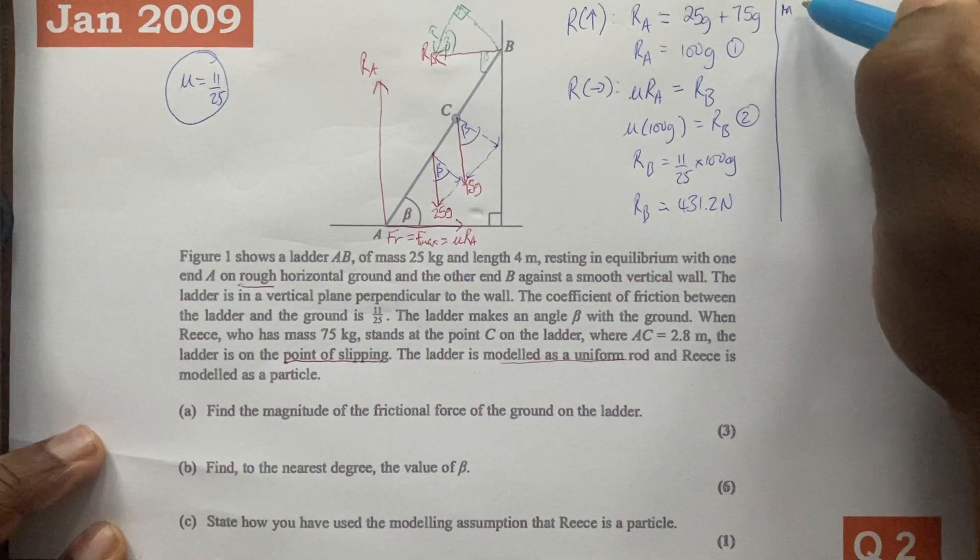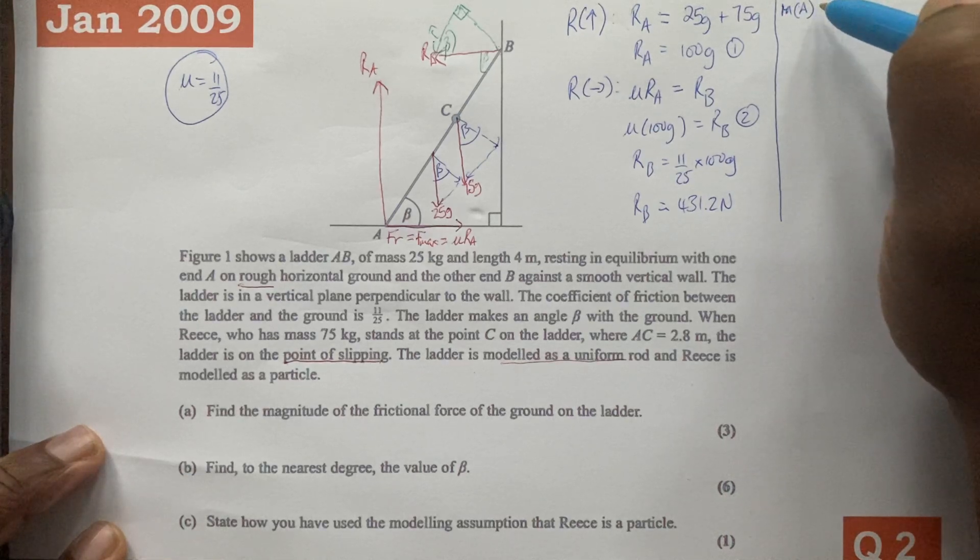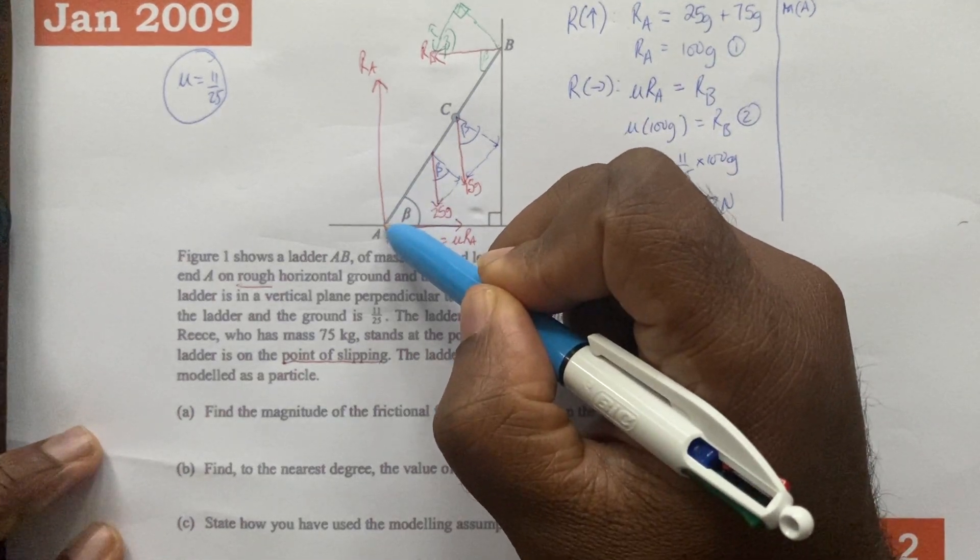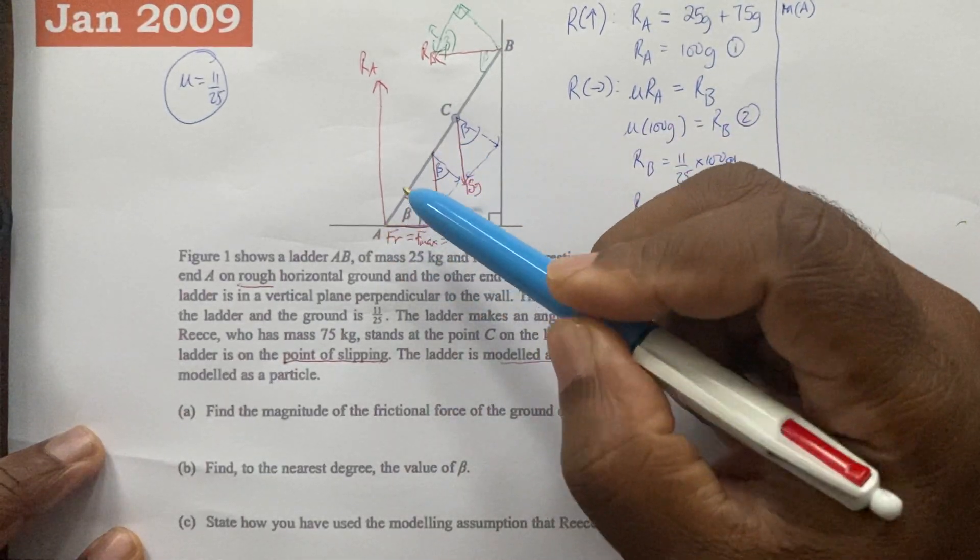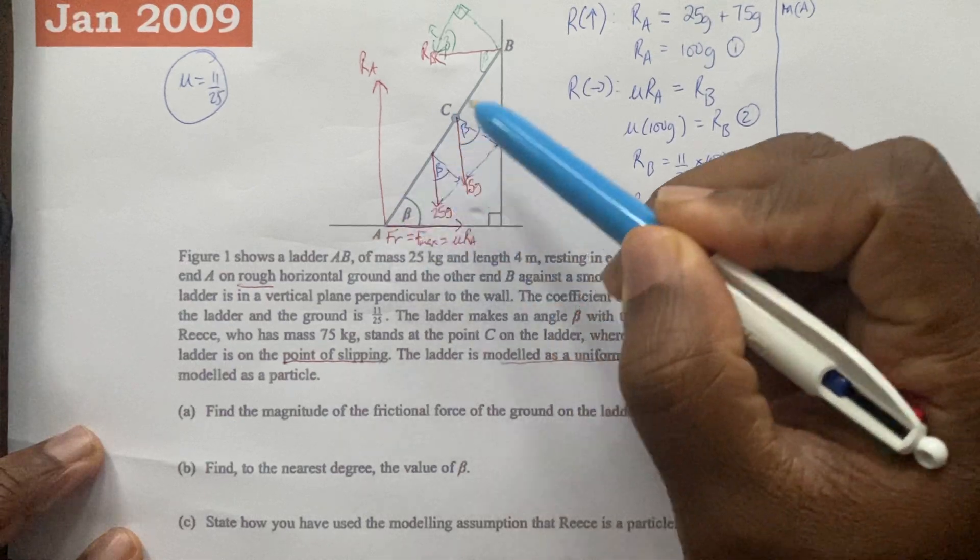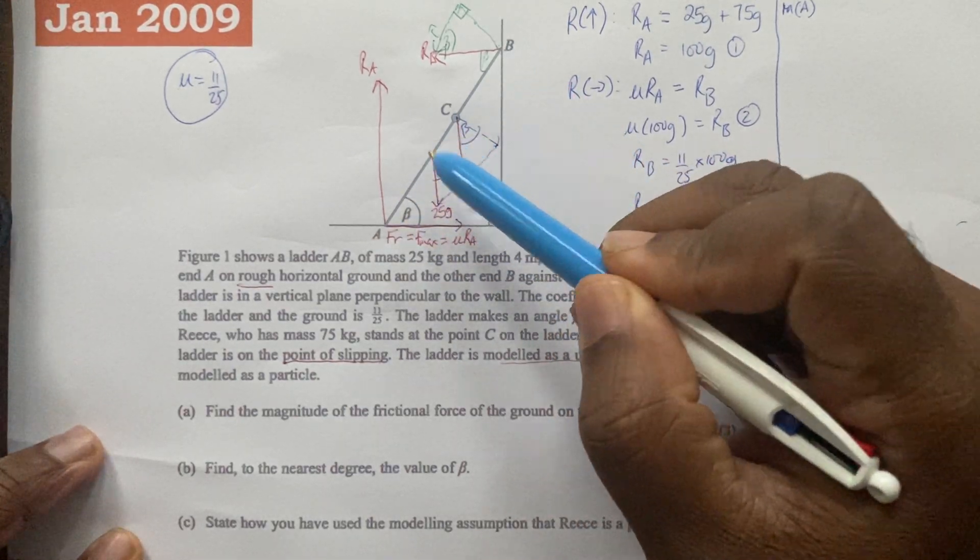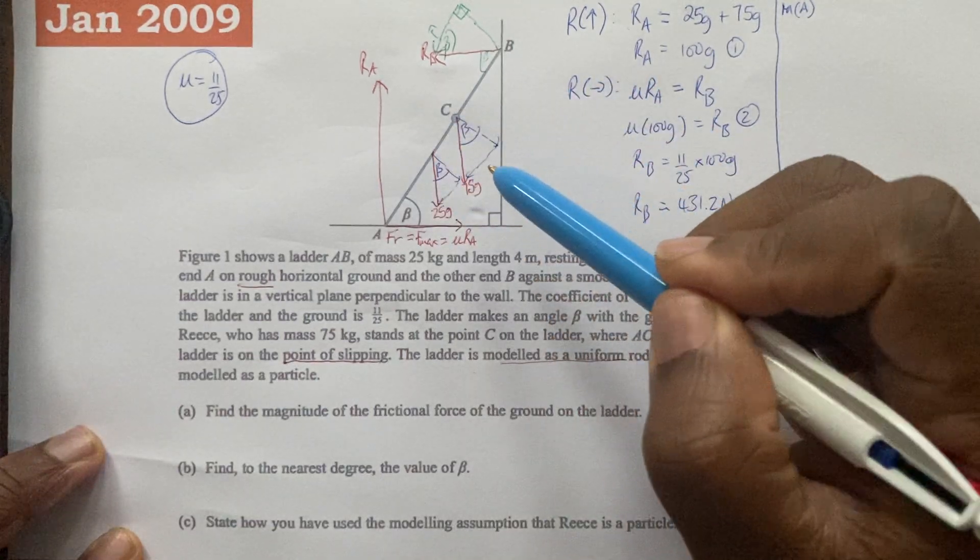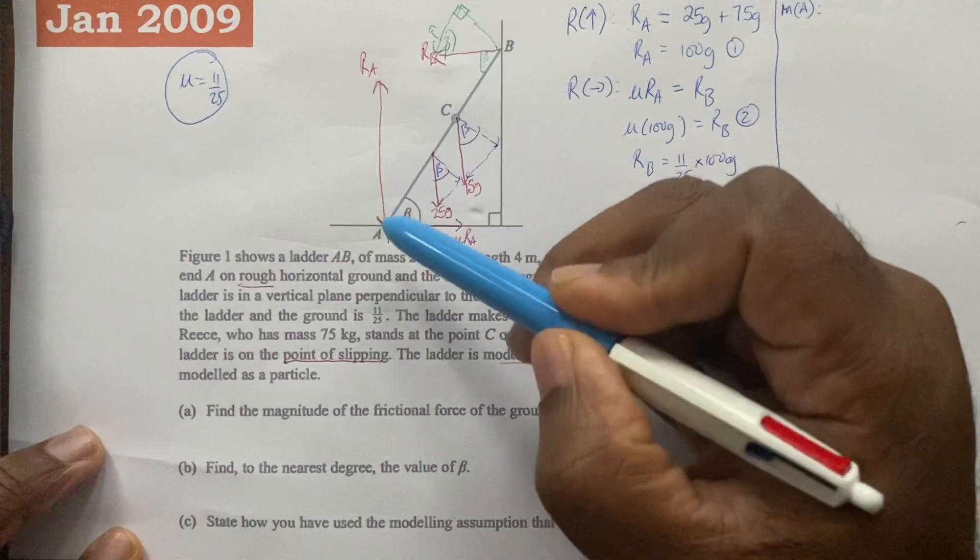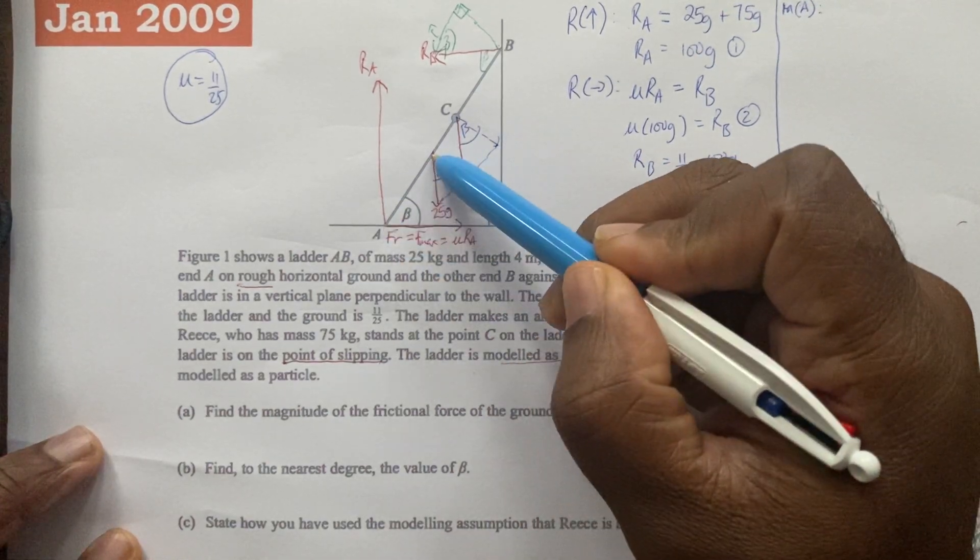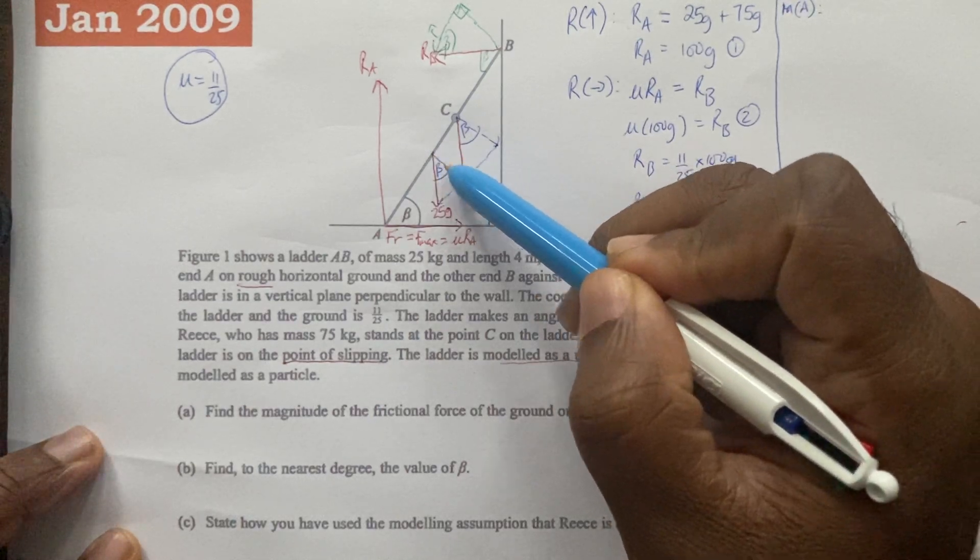Step three will be to take moments about the point A. A is where the ladder meets the ground. When we're taking moments, because the ladder is in equilibrium, we're setting the clockwise turning effect to be perfectly matching the anticlockwise turning effect. We're going to calculate the clockwise turning effect by working out the distance multiplied by the perpendicular component of the force acting at that point.